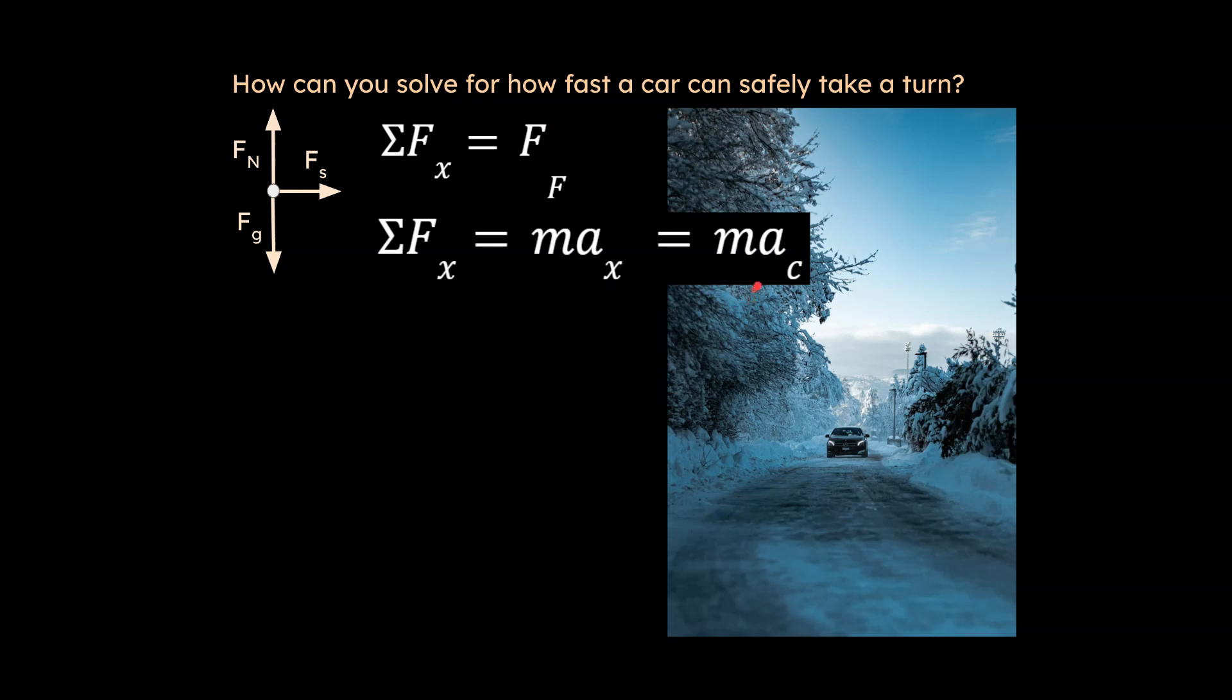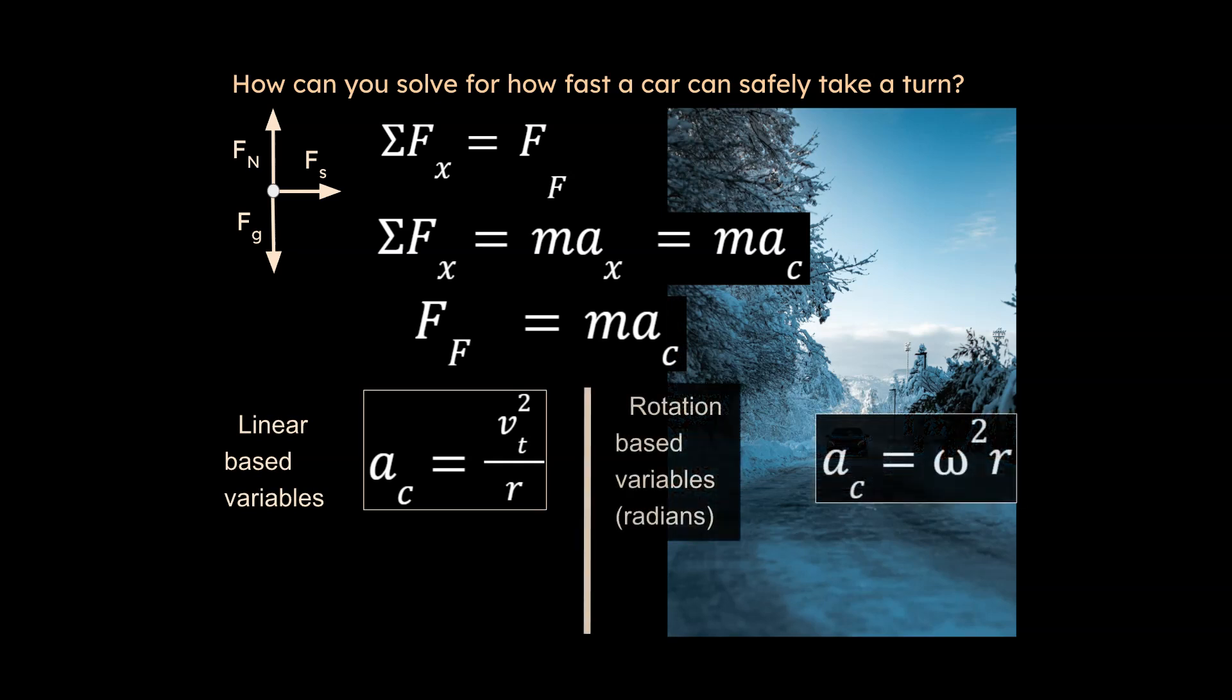Now really important, we need to modify the strategy. Whenever we're talking about something moving in a circular path, we need to think about that, and to say that acceleration is a special acceleration. The overall acceleration in that plane must be centripetal, and so that overall acceleration must be equal to one of two equations. You can do it either way, whether you're using linear-based variables or rotation-based variables.